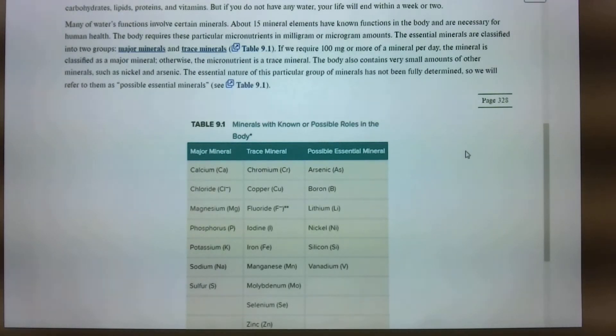Now, we're going to talk about these minerals. There are two groups of these. Essential minerals. Okay. The body requires two particular micronutrients in milligrams or micrograms. I will not need you to know that for each of these, but know that there are essential minerals classified in two groups. Major and trace. Okay. I will use minor to trip you up. Okay. Major and minor kind of makes sense, but it's major and trace. Those are the two groups. If we require a hundred milligrams or more of a mineral per day, the mineral is classified as a major mineral. Okay. Otherwise, it's a trace mineral. And make that connection. Major and a hundred milligrams or more for major minerals.